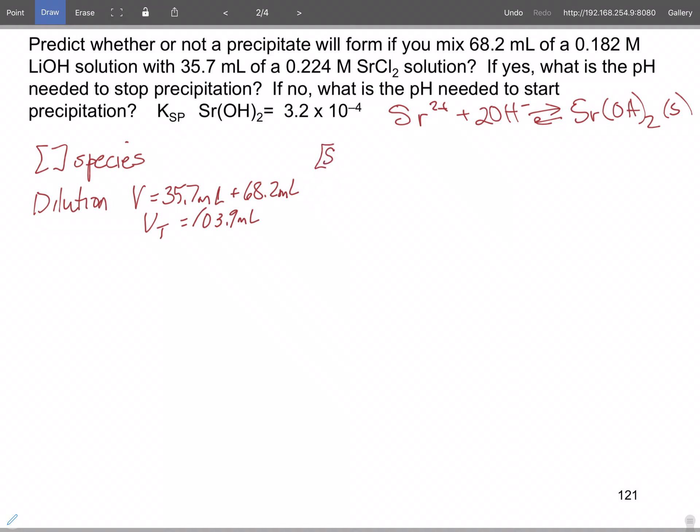So our strontium concentration, we'll do it first because I wrote it down. 35.7 milliliters times 0.224 molar divided by 103.9 milliliters comes out equal to 0.076966. So we're going to use 0.07697 molar.